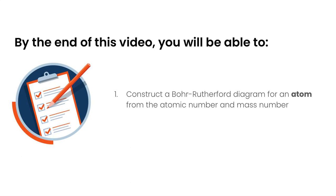In this video we're going to learn how to construct Bohr-Rutherford diagrams. By the end of this video you will be able to construct a Bohr-Rutherford diagram for an atom from the atomic number and the mass number, which we get from our periodic table.